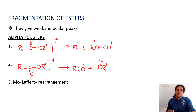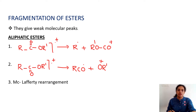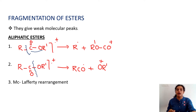The next category is the fragmentation patterns of esters. They give weak molecular ion peaks normally. For aliphatic esters, there are two types of alpha cleavage: the first gives R dot and R'OCO+, and the second involves RCO dot being eliminated to give the cation OR'+